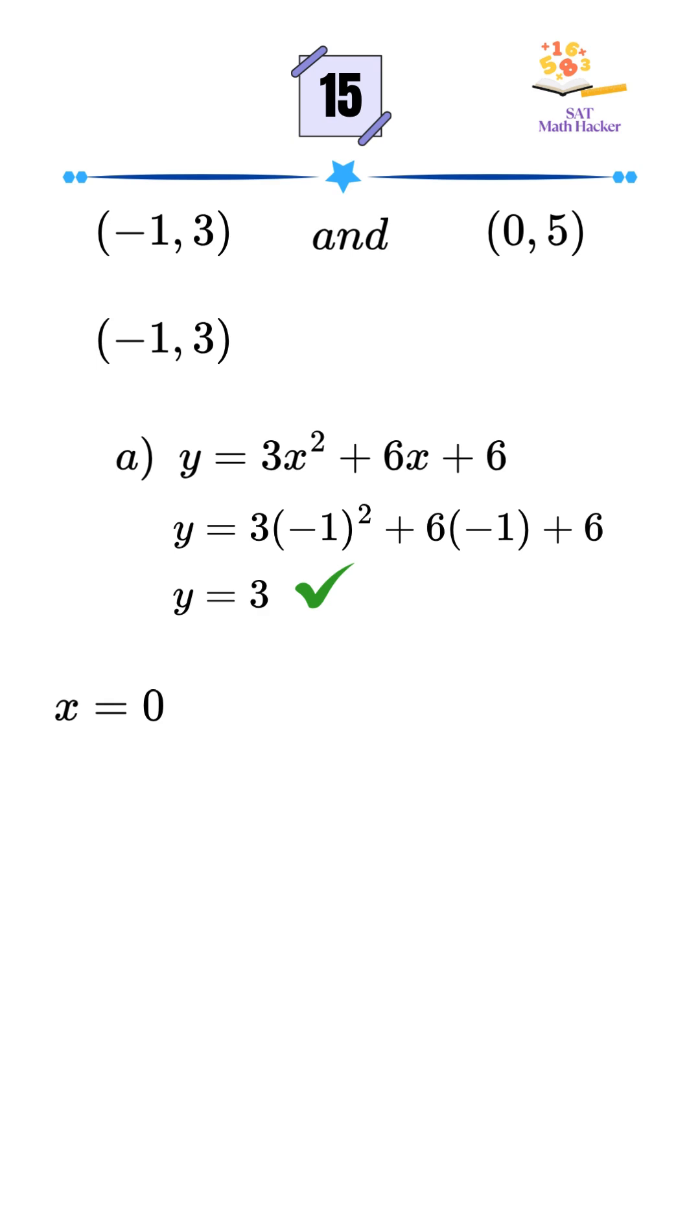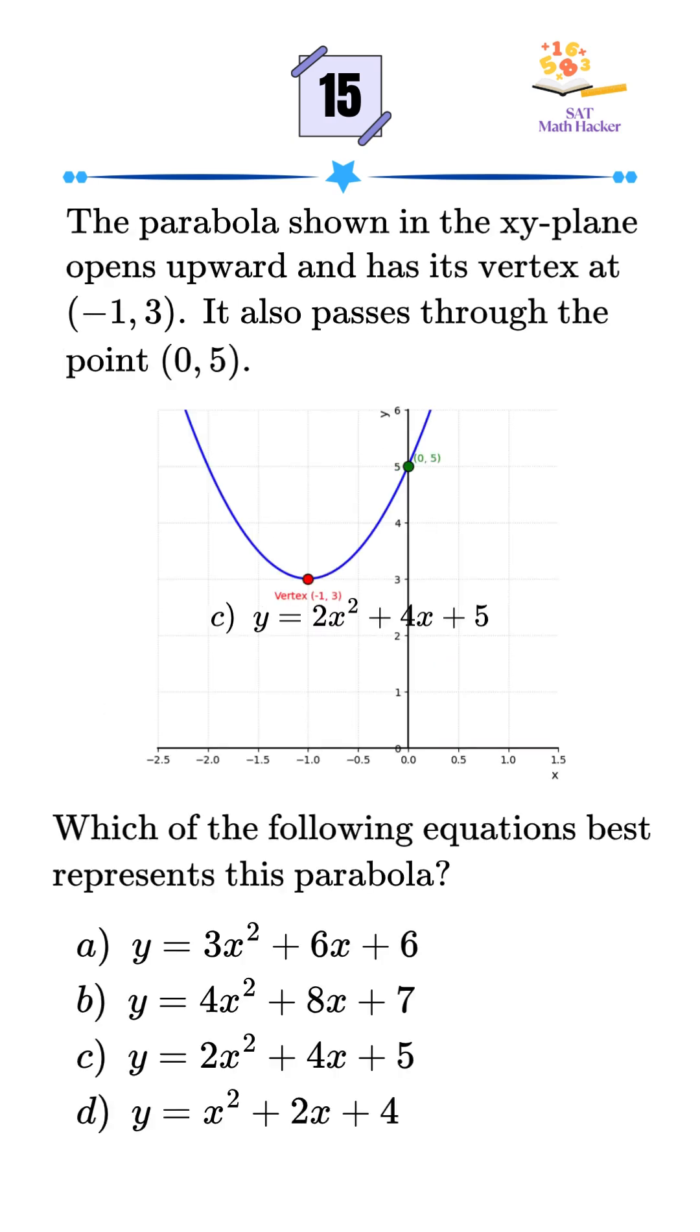We still need to check the second point. Try x equals 0 and y equals 5 in option A. We get y equals 6, but the actual y value is 5. So option A is incorrect.